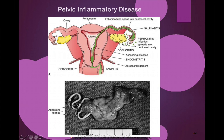PID is an ascending infection affecting different portions along the reproductive tract. It moves upward from vaginitis to cervicitis, then into the endometrium causing endometritis, then into the fallopian tubes causing salpingitis, and it can also spread into the ovaries causing oophoritis.